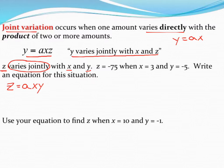Like we did with our inverse variation equation, let's plug in the information that we know to find out what a, our constant of variation, is. So they tell us that when z is 75, x is equal to 3, so I'll plug in 3 for x, and y is equal to negative 5. So here's the equation I want to solve in order to find out what a is equal to.